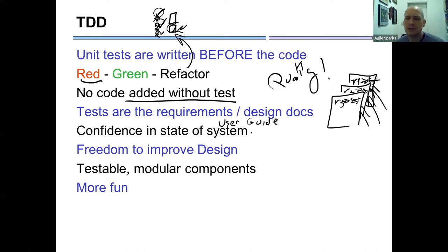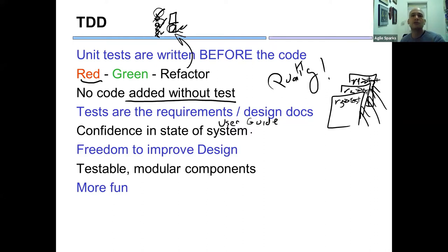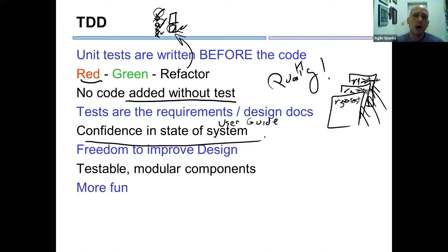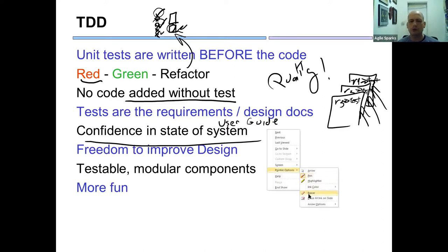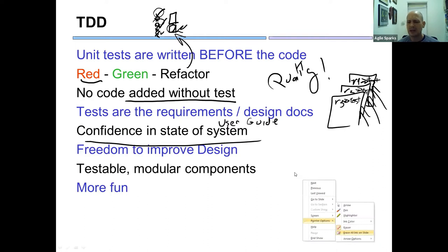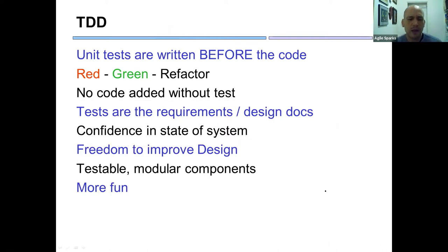TDD also serves as the best user guide you can have. When you go into a new development environment, the first thing to do is look at the unit tests — they're better than reading a thick manual. TDD also gives you confidence in the state of your system: before you finish your product, you already know 78 out of 79 tests are green. And it gives you the freedom to improve your code and design.